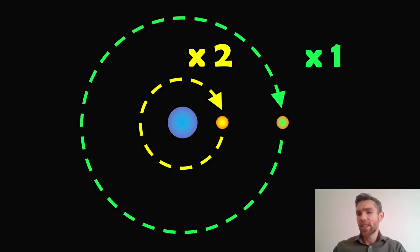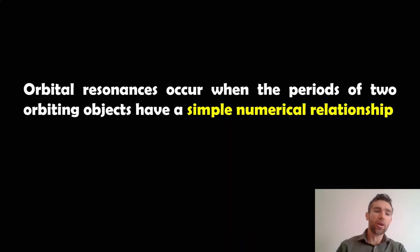That's a specific type of resonance for orbiting bodies. Orbital resonances generally occur when the periods of two orbiting objects, could be more but at least two, have a simple numerical relationship. That basically means they will orbit with some ratio of one another.